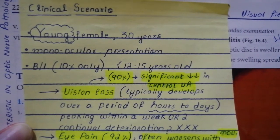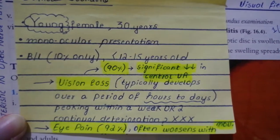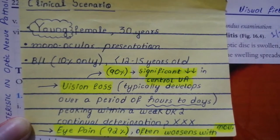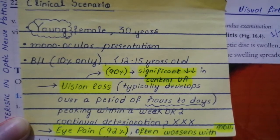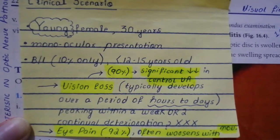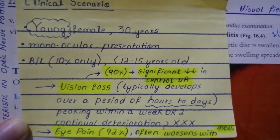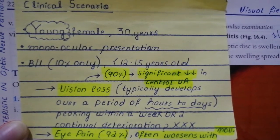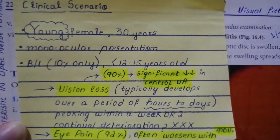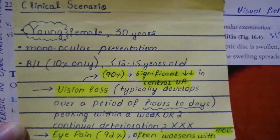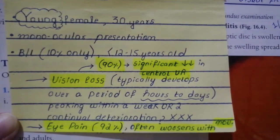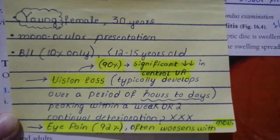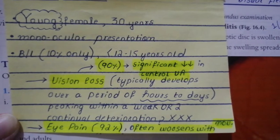The sudden monocular visual loss is in most cases associated with pain. 92% of patients with optic neuritis present with eye pain. The two most common clinical findings in optic neuritis are sudden monocular visual loss and eye pain.